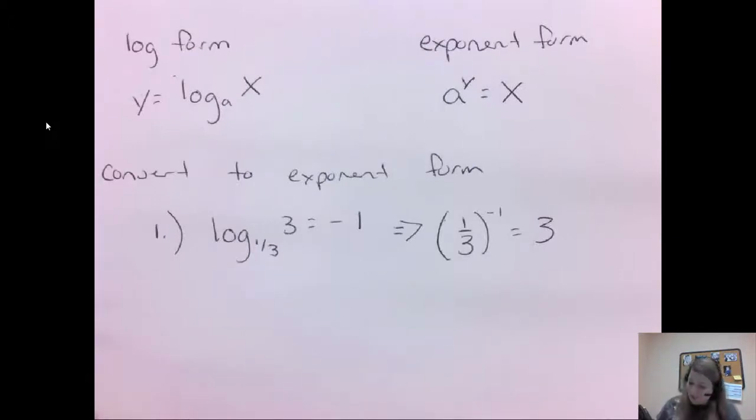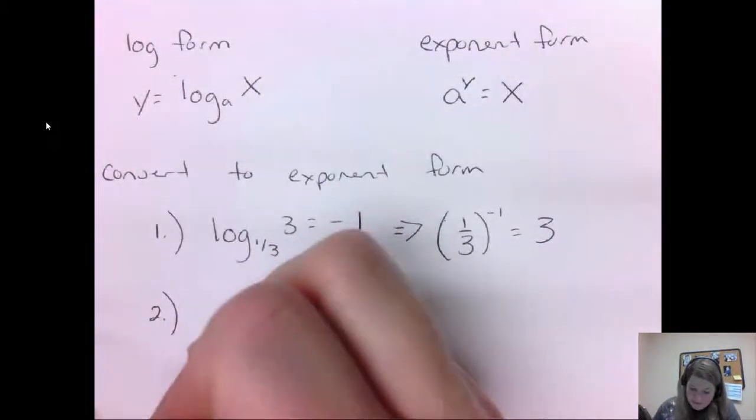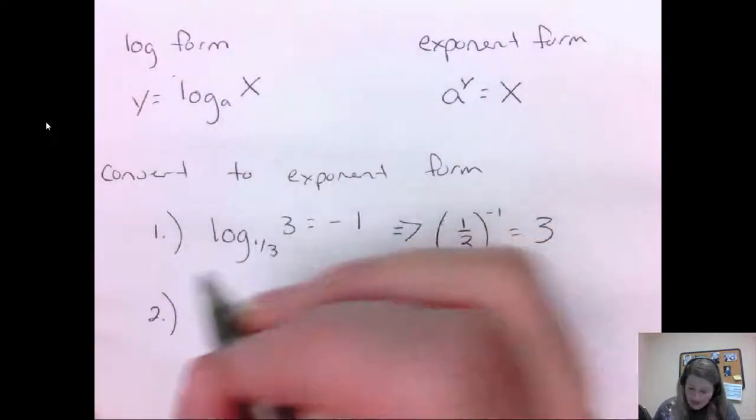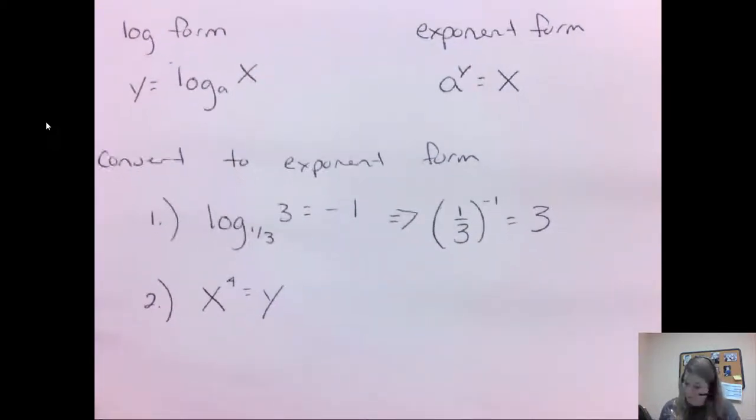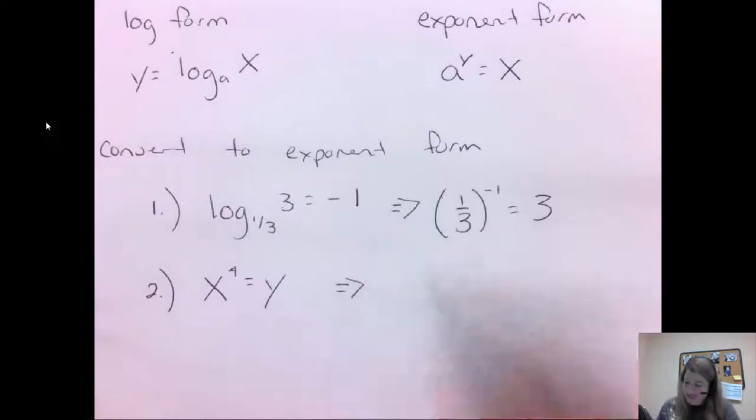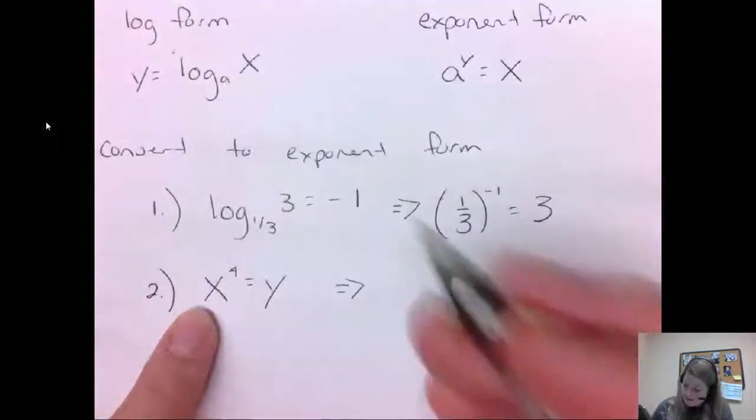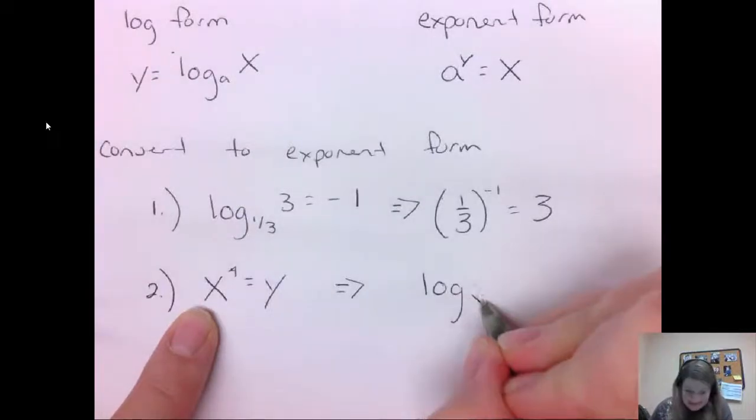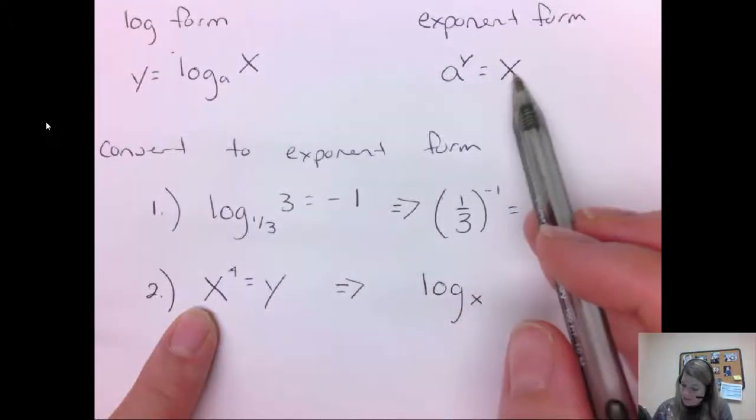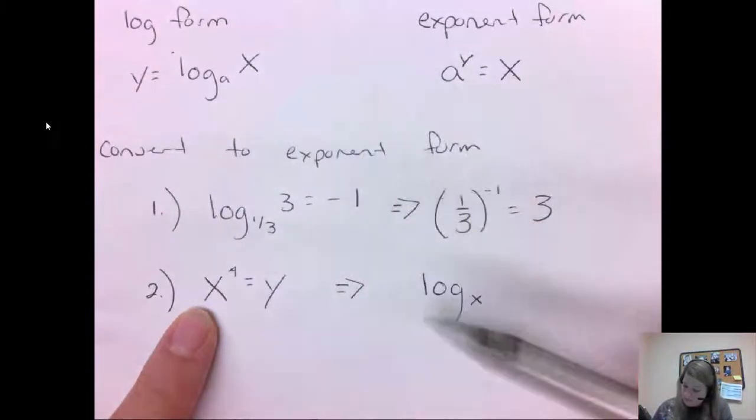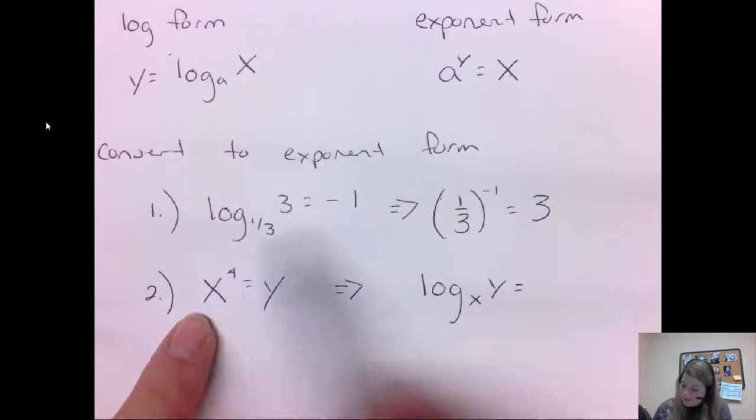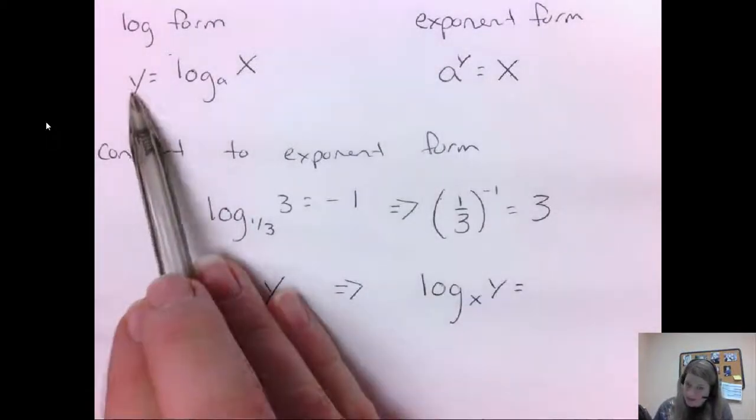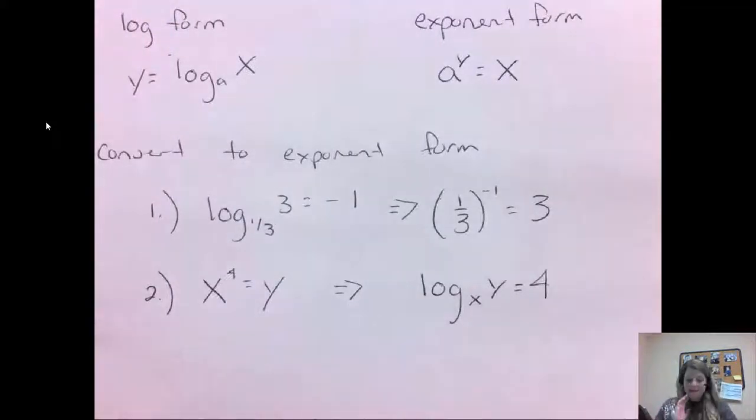But the focus really is converting it. What if I had x to the 4th power equals y, and I want to convert to log form? The exponent is going to become the base on the log. So we have log base of x, and what it equaled was what our log was of. So it's going to equal y. And our exponent was what it equaled on the other side. So that's 4. So that's log base x of y equals 4.